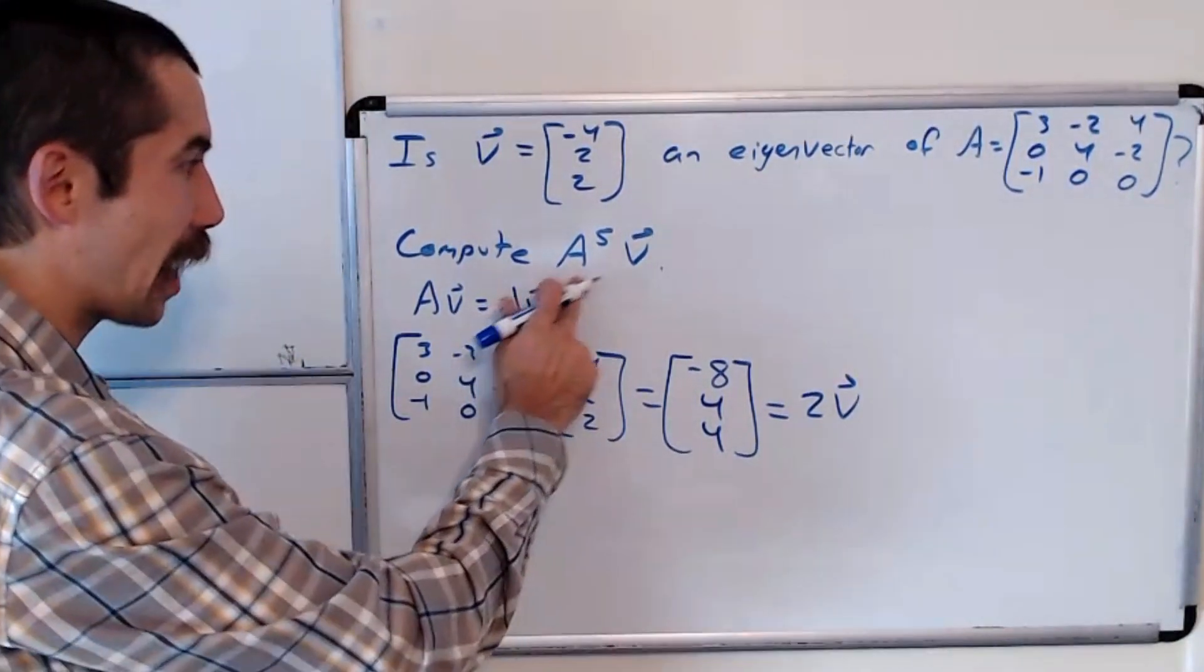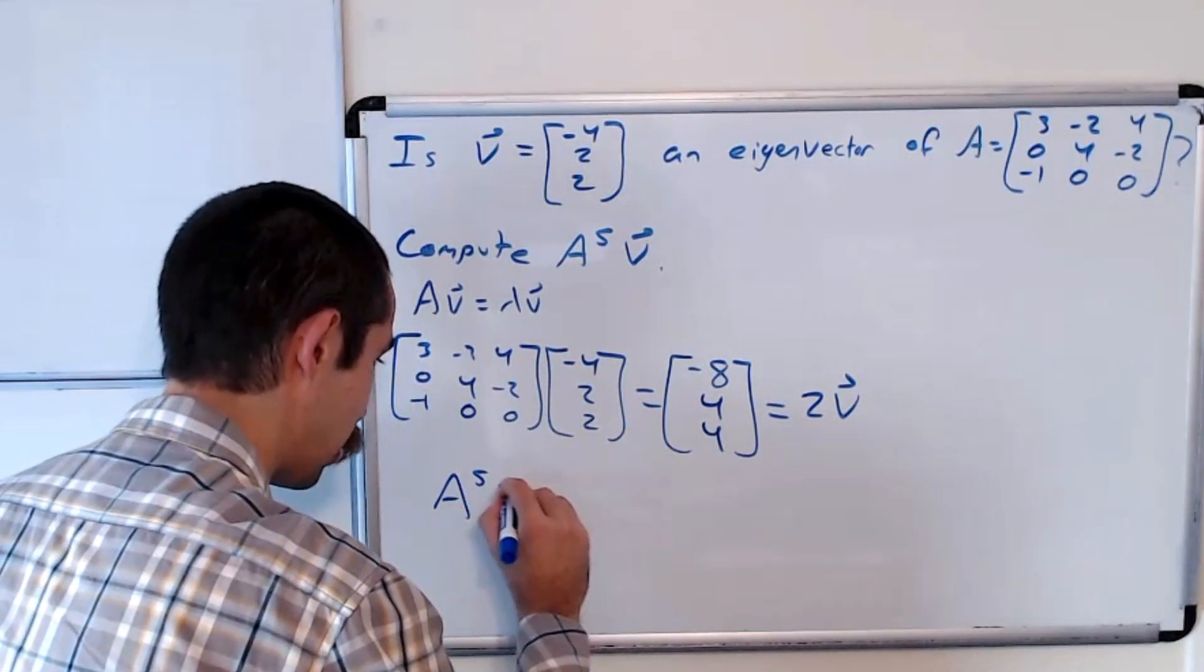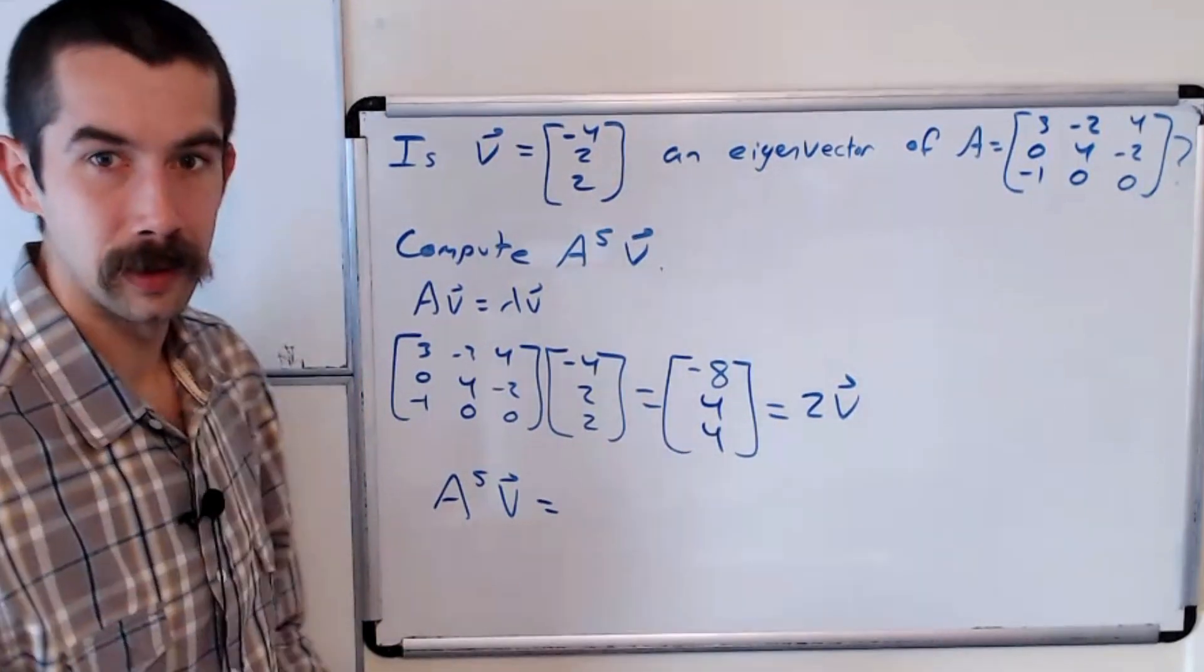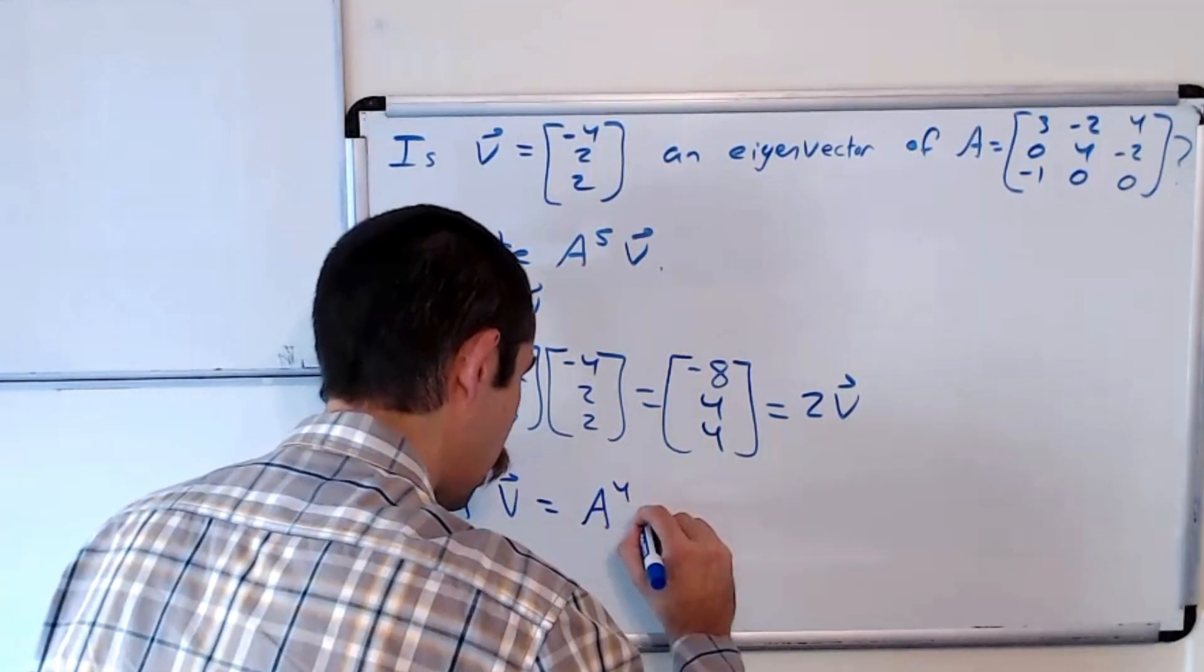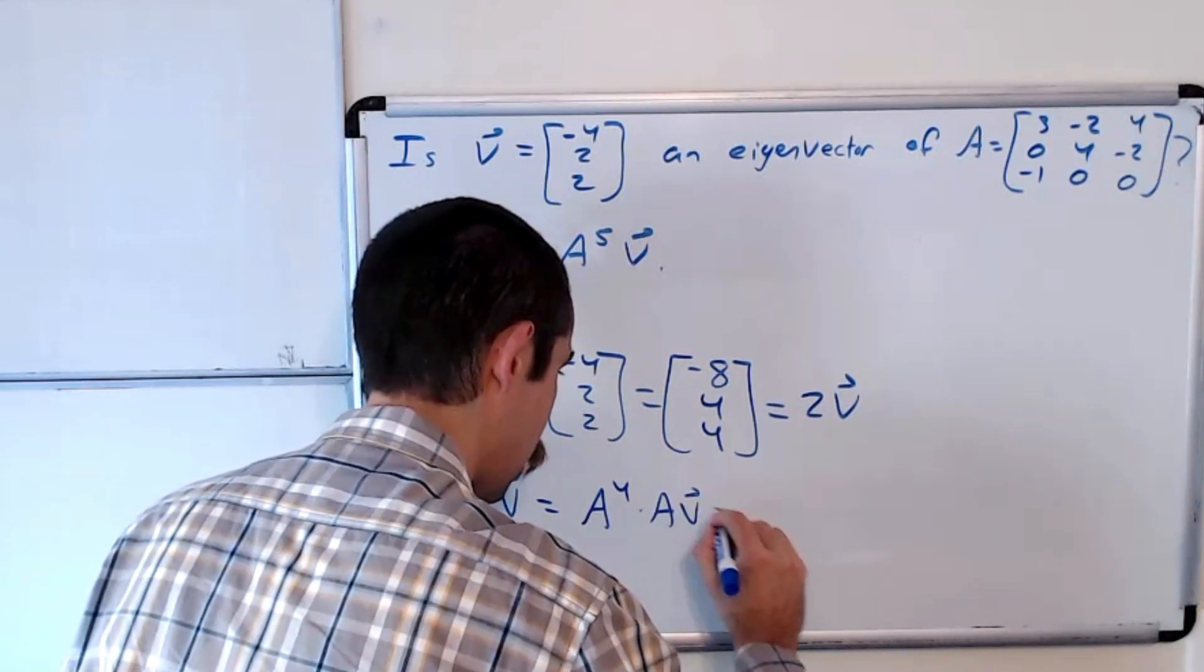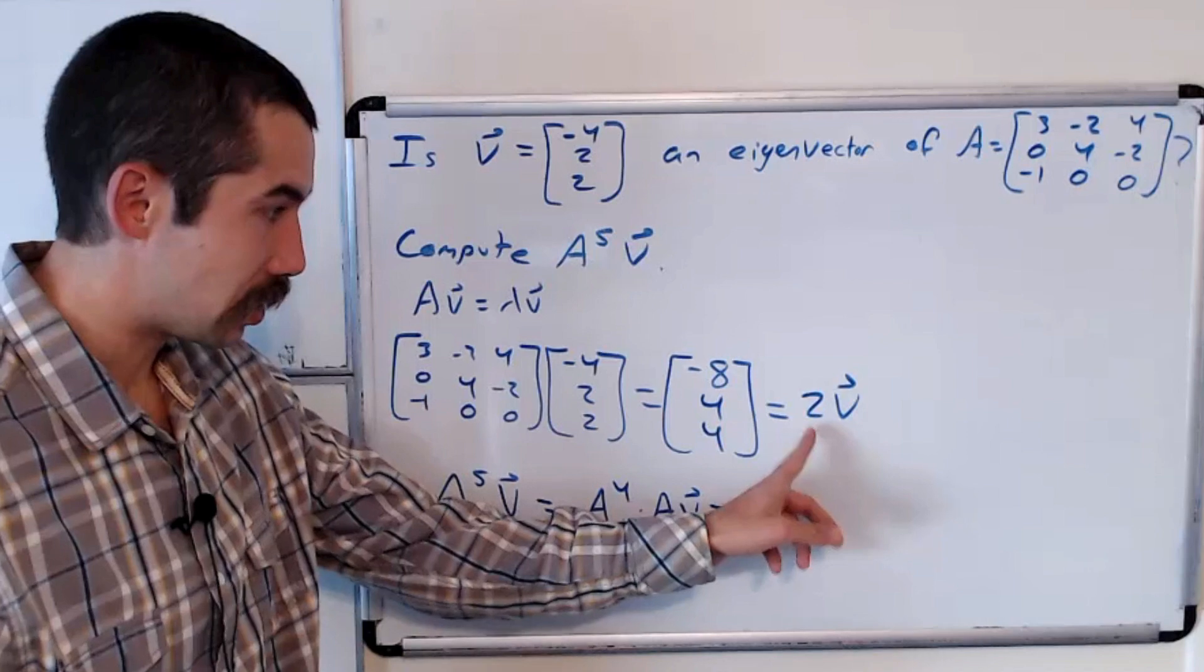And so now to compute A to the 5th V, A to the 5th V is equal to, well, A to the 4th times A V, which is, well, we know A V is 2 V.